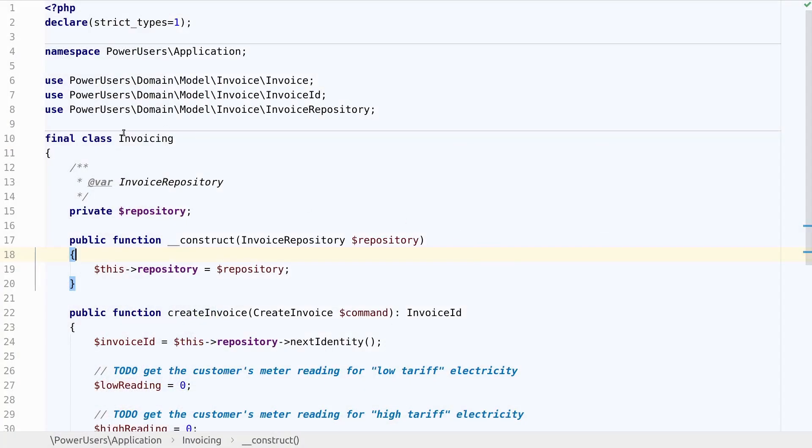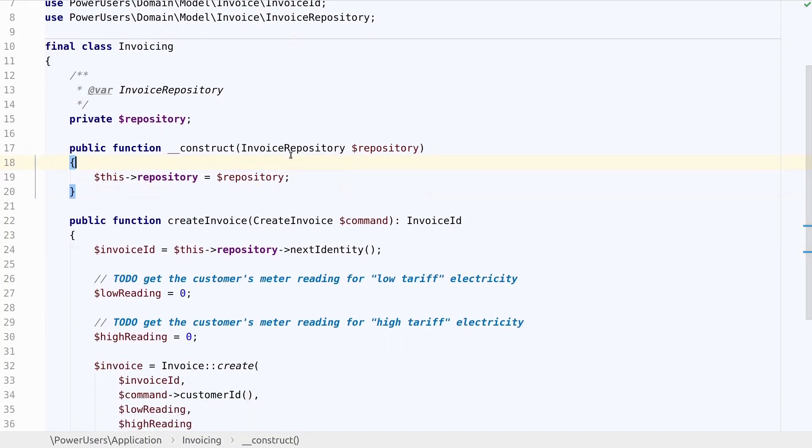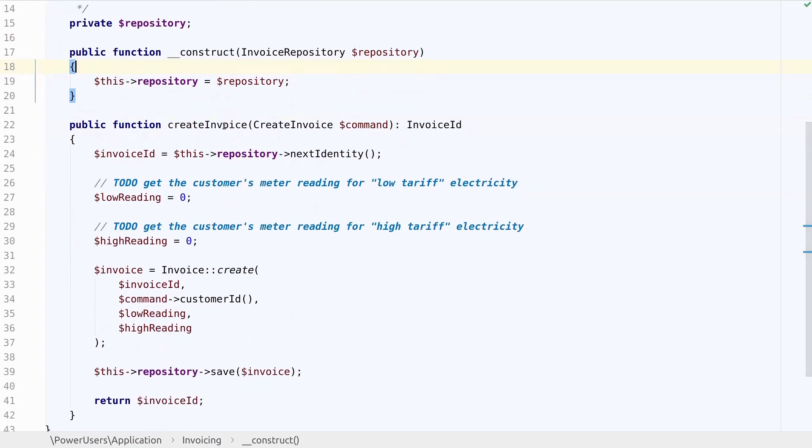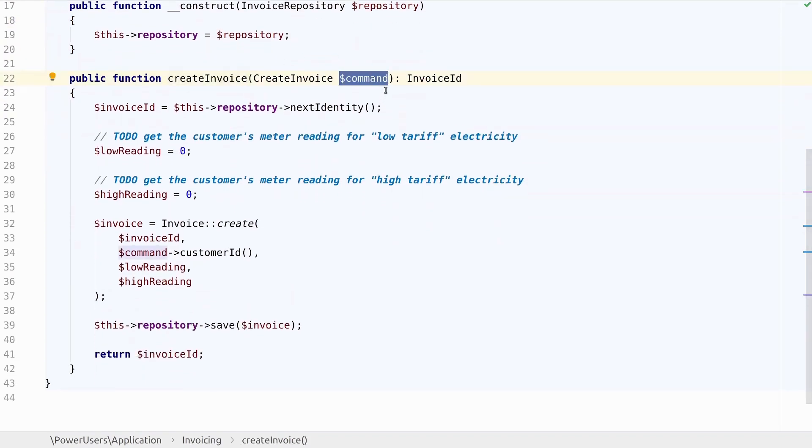Let's take a look at some code for that. We have the invoicing service in our application layer. It gets the invoice repository injected. And when it is asked to create an invoice it will receive a command object which has the customer ID for which we are going to create the invoice. Then here we first get the next identity for the next invoice that we are going to create. And somehow we have to determine what will be that low reading and high reading from the customer's meter. Using this information we can finally create the invoice entity and save it in the repository, after which we return the new invoice ID.